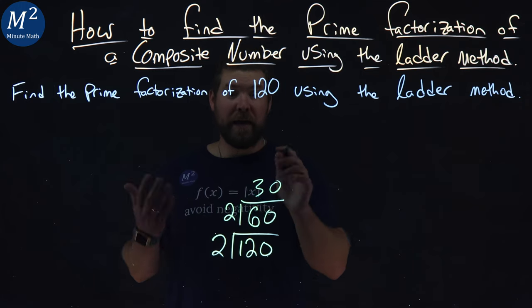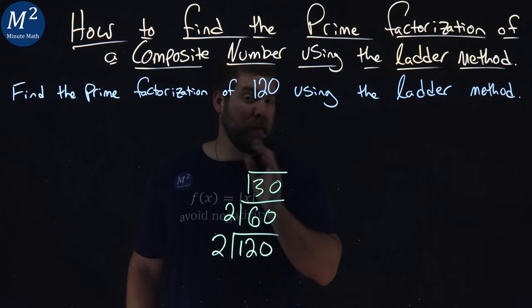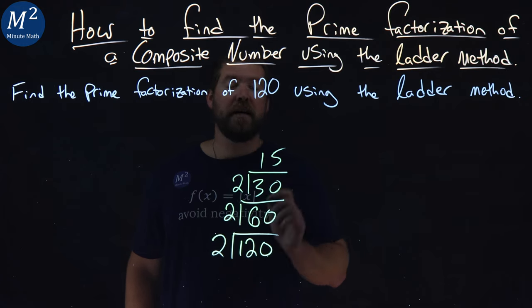Keep on going. 2 goes into 30 again. The lowest prime number is 2, so 2 goes into 30, and that's going to be 15 times.